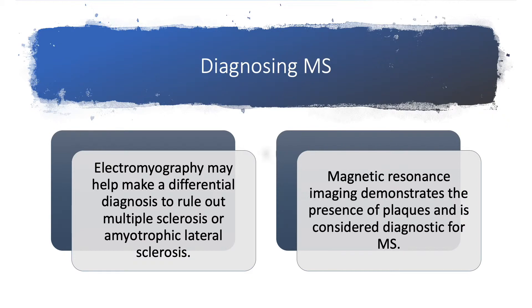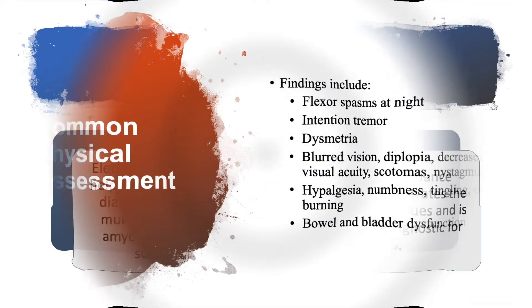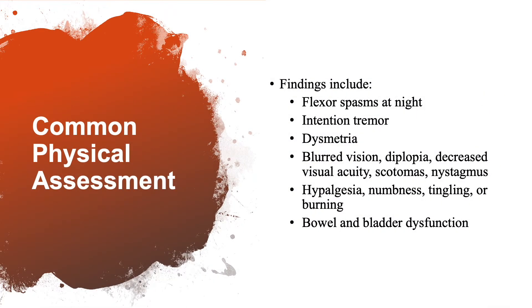Common physical assessments for the person with MS include flexor spasms at night, intention tremor, dysmetria, blurred vision, diplopia, decreased visual acuity, scotomas, nystagmus, hypalgesia, numbness, tingling or burning, and even bowel or bladder dysfunction.